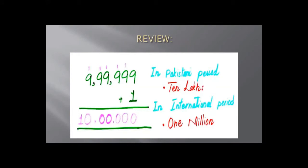Yesterday we studied how to work with seven-digit numbers — how to place them in Pakistani period or international period. The largest six-digit number is nine lakh, nine thousand, nine hundred and ninety-nine. When you add one to nine lakh ninety-nine thousand nine hundred and ninety-nine, you get ten lakh. So the seven-digit number is ten lakh. In Pakistani period, the seven-digit number reads as ten lakh, but in international period, the seven-digit number reads as one million.